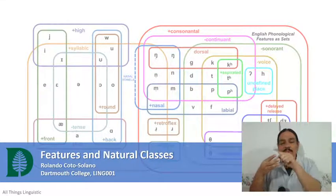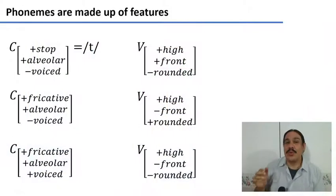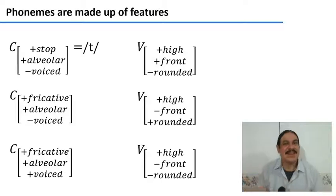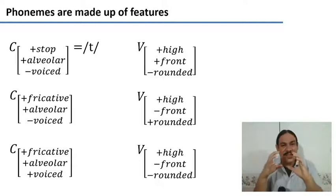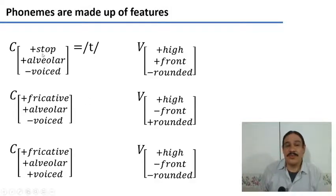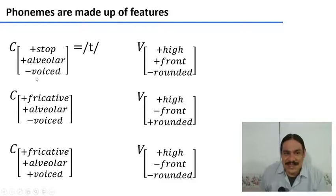We are now going to call these features, and we are going to use features to describe phonemes. We're going to think of phonemes as bundles of different features that we can use to describe whether, for example, they are a stop, an alveolar sound, or whether they are voiced or voiceless.